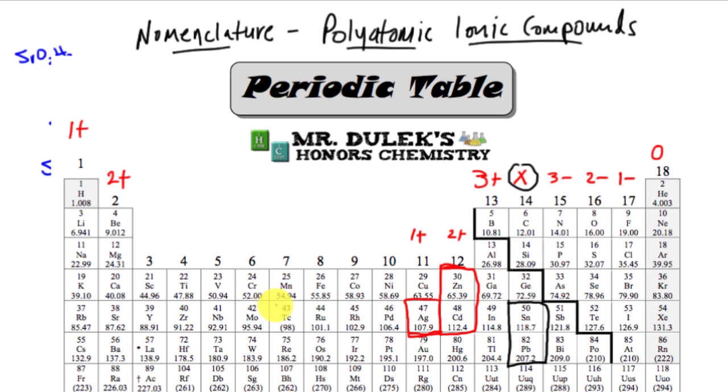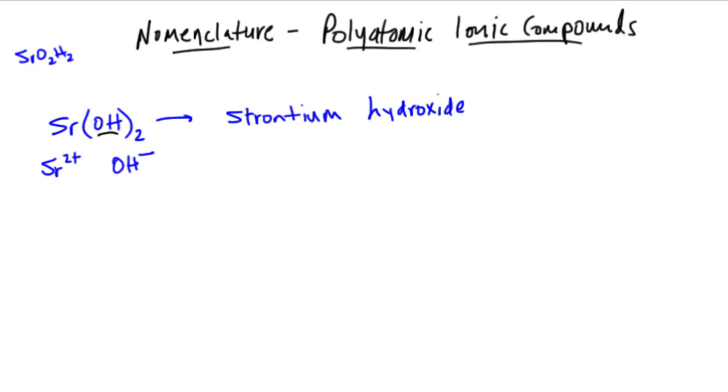So again, if you didn't memorize the polyatomic ions, you're going to have a lot of trouble with this. Strontium hydroxide. Now one last thing I need to do before I finish is check: is strontium a transition metal? Strontium is right over here. It is not a transition metal, so therefore I do not need a stock number. Remember, the exceptions would be tin and lead. Tin and lead do require stock numbers. Strontium is not a transition metal. It's not tin and lead, so therefore no stock number is needed. So there's my name: strontium hydroxide.